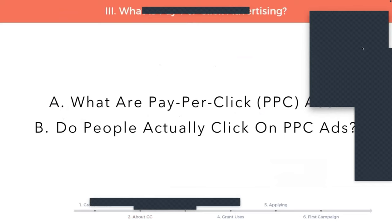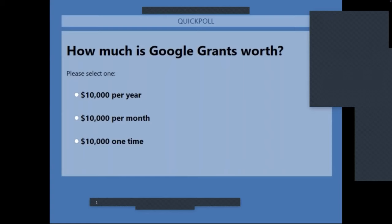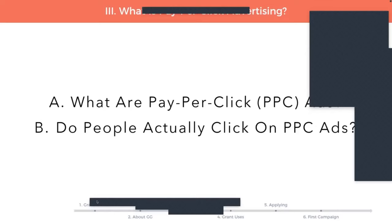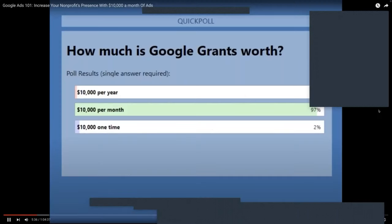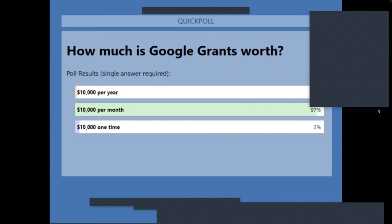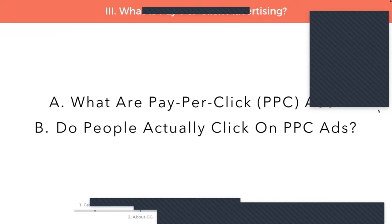I'm going to pull up a poll right now to see if you guys know how much the Google Grant is worth. If you want to participate, you can put your answer into the chat. Looks like most everyone's voted. Most of you got it — it's correct: $10,000 per month. That's how much you'll get with the Google grant. I'm going to turn it over to Simon now to describe what pay-per-click advertising is.